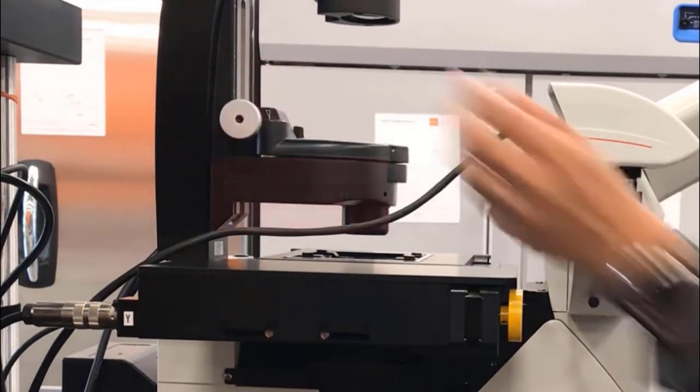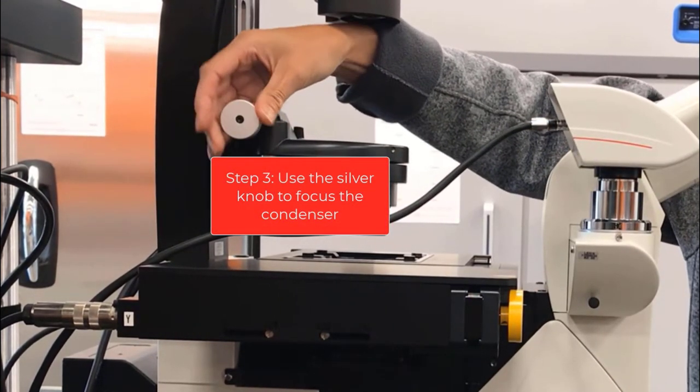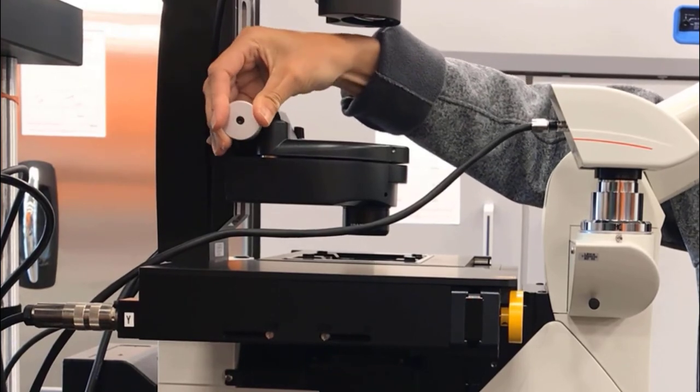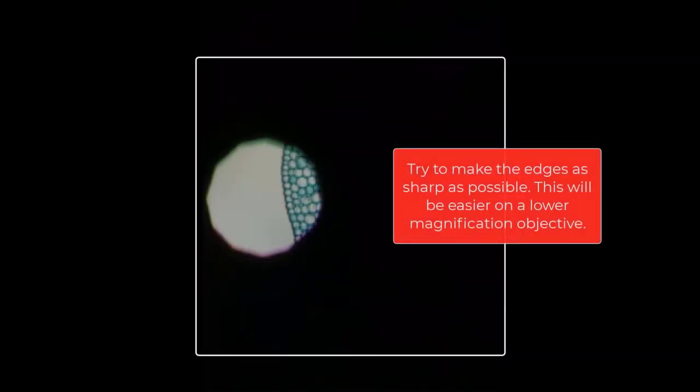The next thing you want to do is focus the condenser by using the silver knob. Raise or lower it while looking through the eyepiece to focus the condenser. You want to try to make the edges as sharp as possible. This will be easier on a lower magnification objective like the 10x.